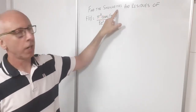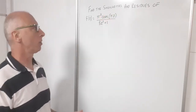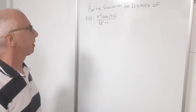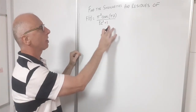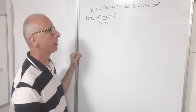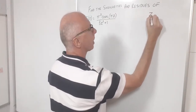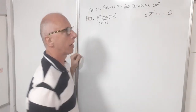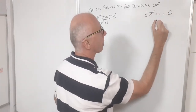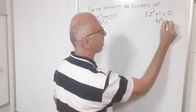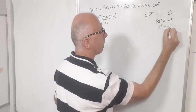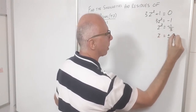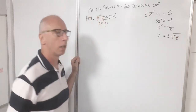First of all we need to find the singularities before we even think about the residues. The singularities are when the denominator is going to be 0. So let's set 3z² + 1 = 0, giving us 3z² = −1, so z² = −1/3, and therefore z = ±√(−1/3).